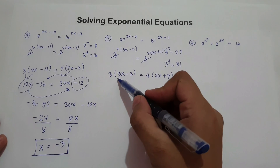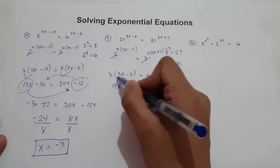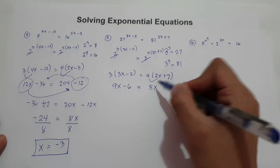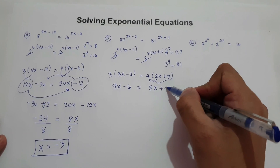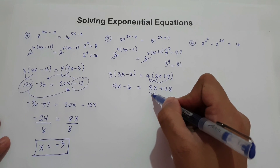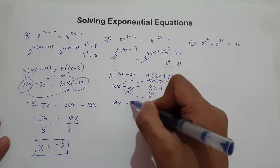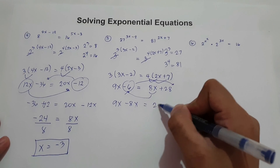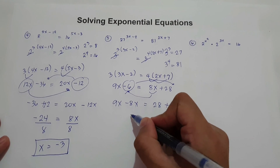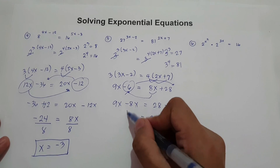Multiply 3 by 3x minus 2: 3 times 3x is 9x, and 3 times negative 2 is negative 6. This equals 4 times 2x is 8x, and 4 times 7 is 28. Combining like terms: 9x minus 8x equals 28 plus 6. So 9x minus 8x is simply x, and 28 plus 6 is 34. The value of x is 34.